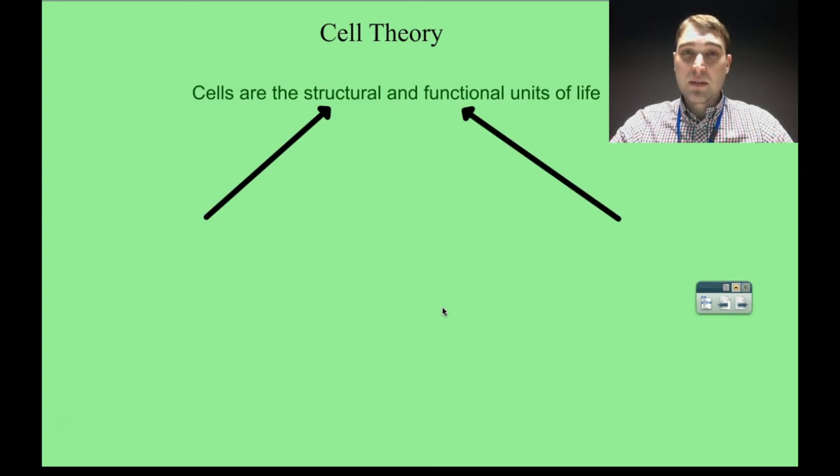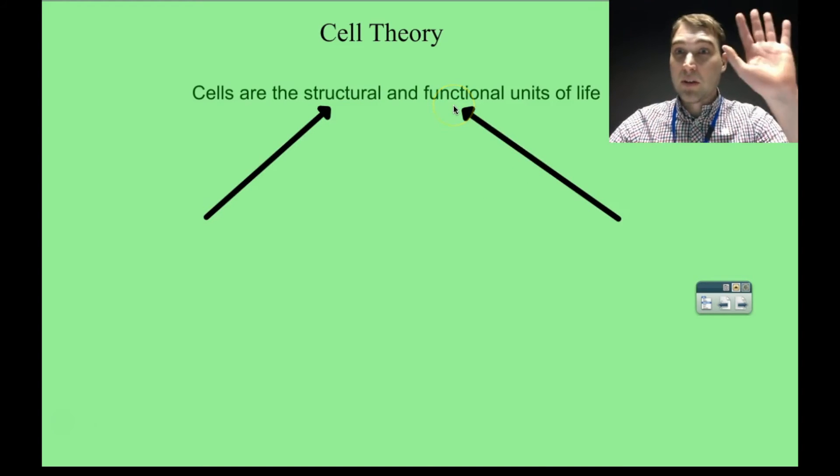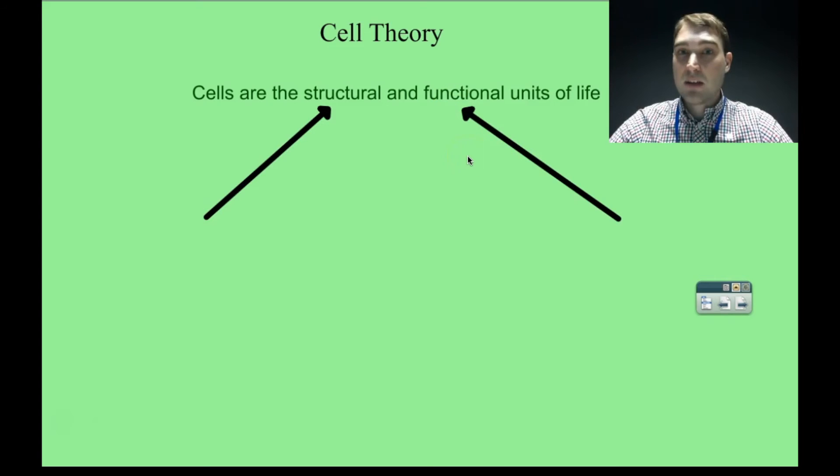So we're going to start talking about cell theory. Cell theory talks about cells and why they're important and how they come about. The fundamental idea is that cells are the structural and functional units of life. When we talk about structural, they make up what living things are. Your hand is made up of lots of cells. They're also functional—they do the jobs of living things. So they're both structural and functional.